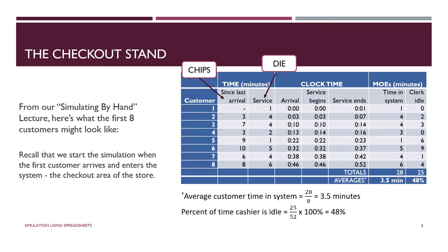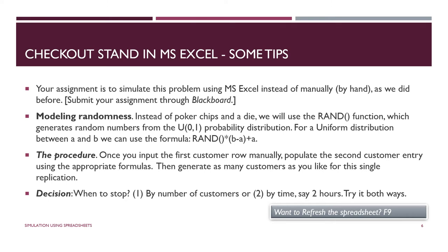Here are some hints to help you get started with your model in Excel. To model randomness, we use Excel's RAND function. To generate values from a uniform distribution between limits a and b, use the formula: RAND() * (b - a) + a. The RAND function gives you a random number on a zero-to-one distribution, and you manipulate it that way to get one between a and b.